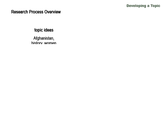First let's take a quick look at an overview of the research process. First you come up with some topic ideas. Next, do some background research to find out more information about your topic ideas. As you do background research, you might add ideas to your topic list, or you might change them altogether.